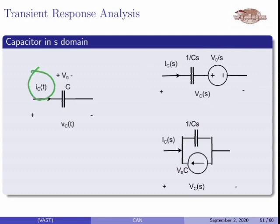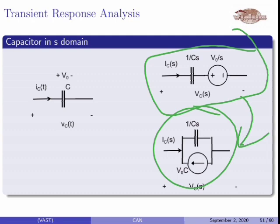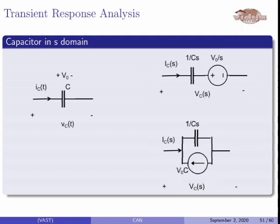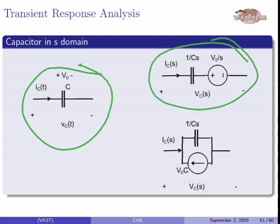The current source value is obtained by taking the voltage source value V0/S divided by the impedance 1/CS, which gives V0/S times CS, so V0 times C. Therefore, the current source value is V0 times C. When we have a capacitor in the S-domain, we have impedance 1/CS in series with a voltage source V0/S, or equivalently a current source of value V0 times C in parallel with 1/CS.